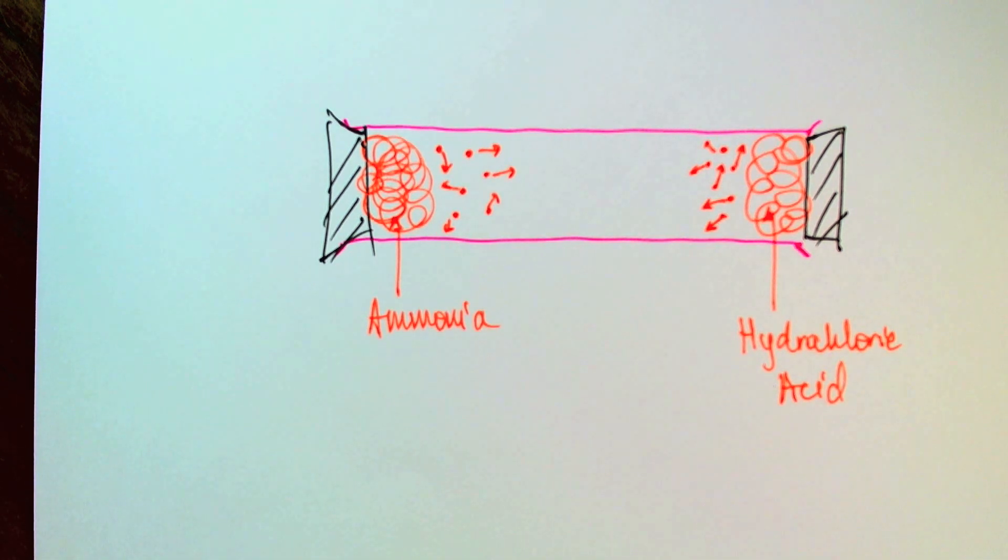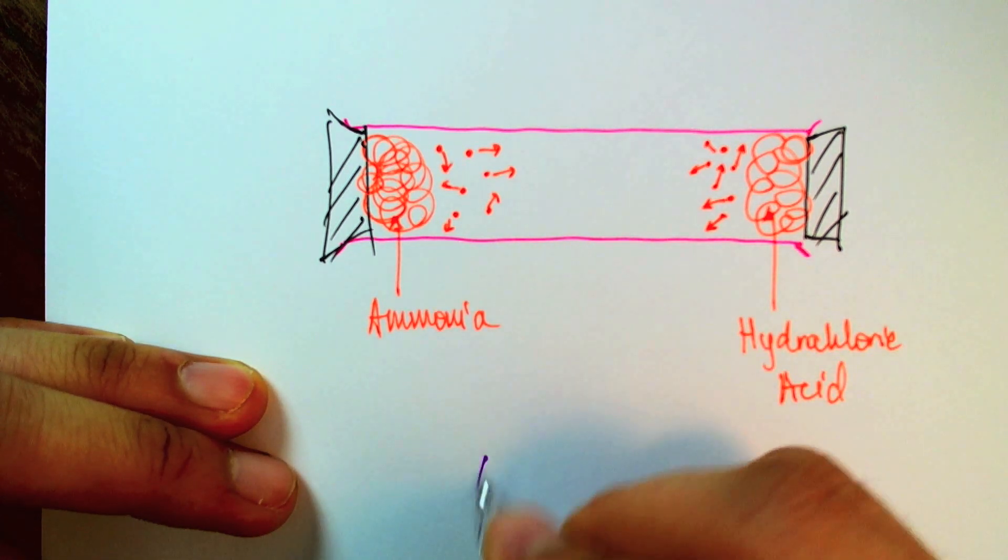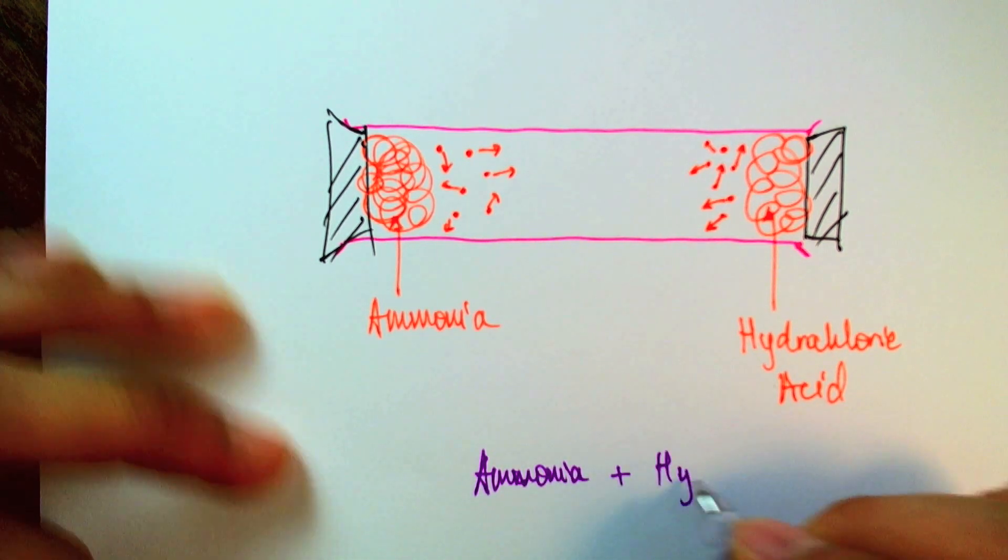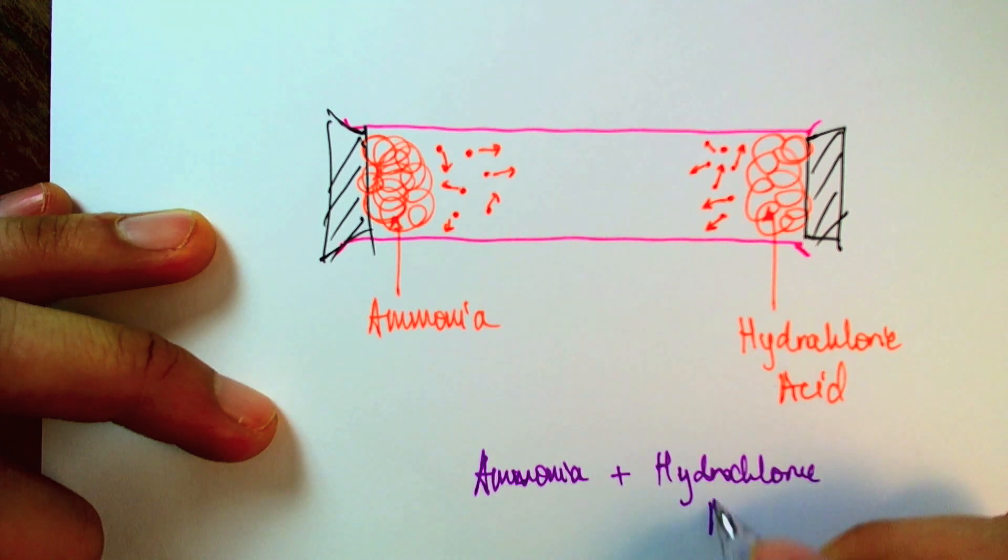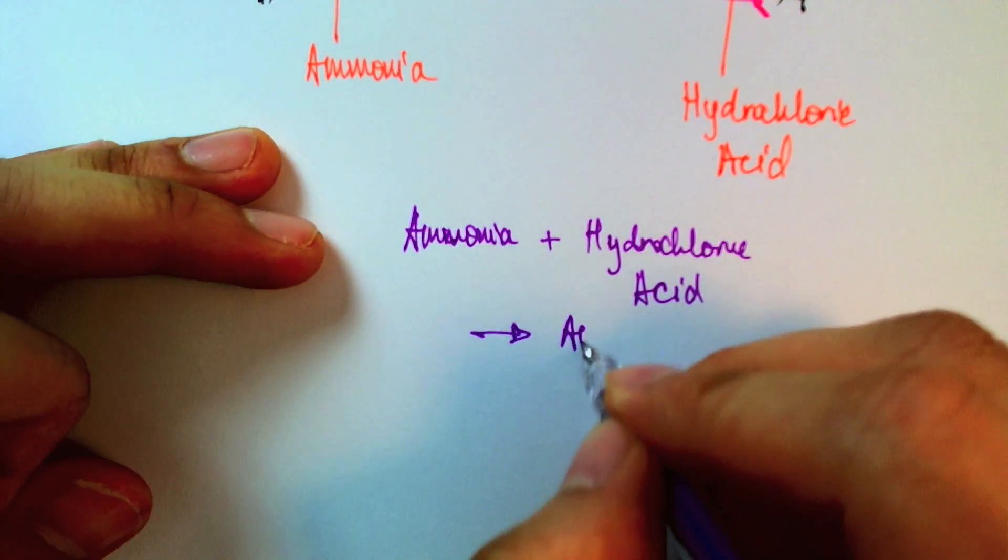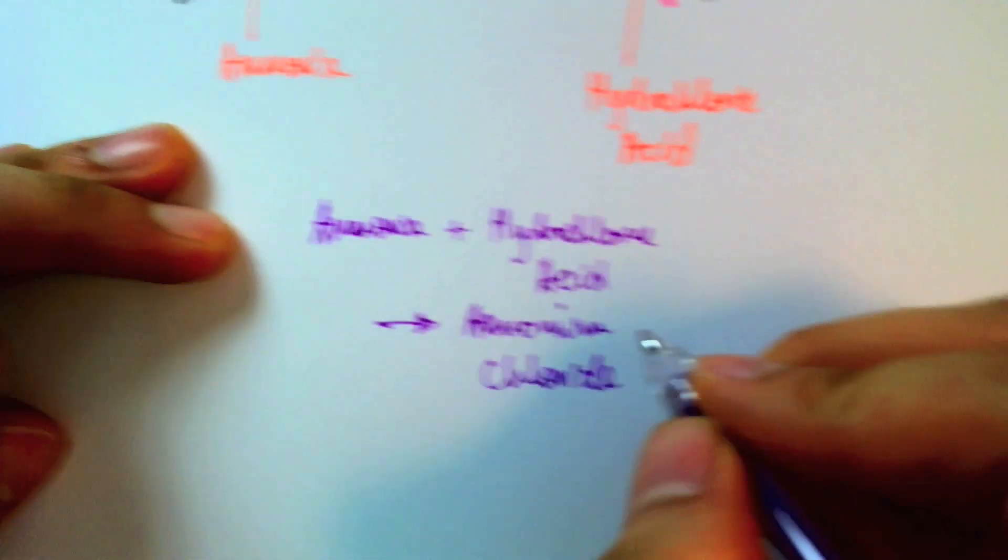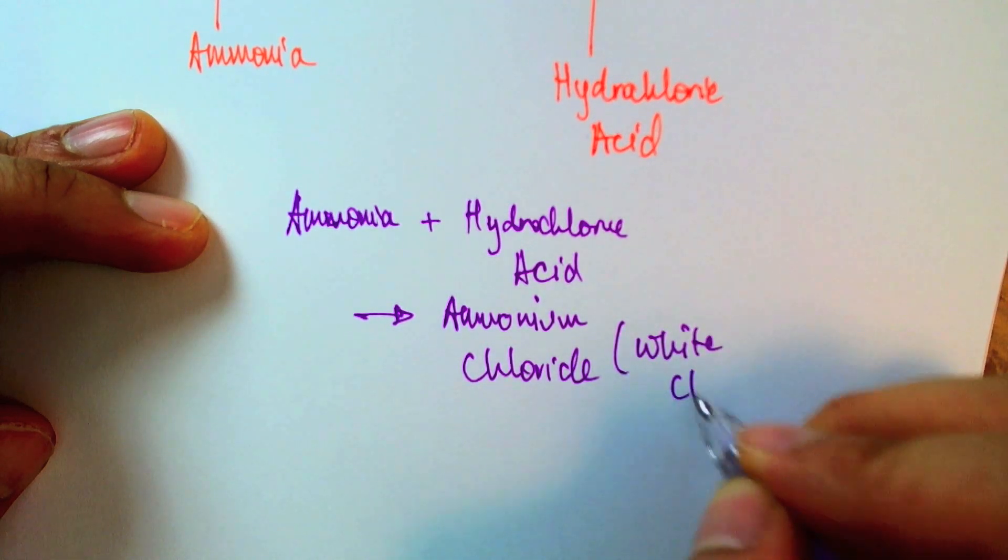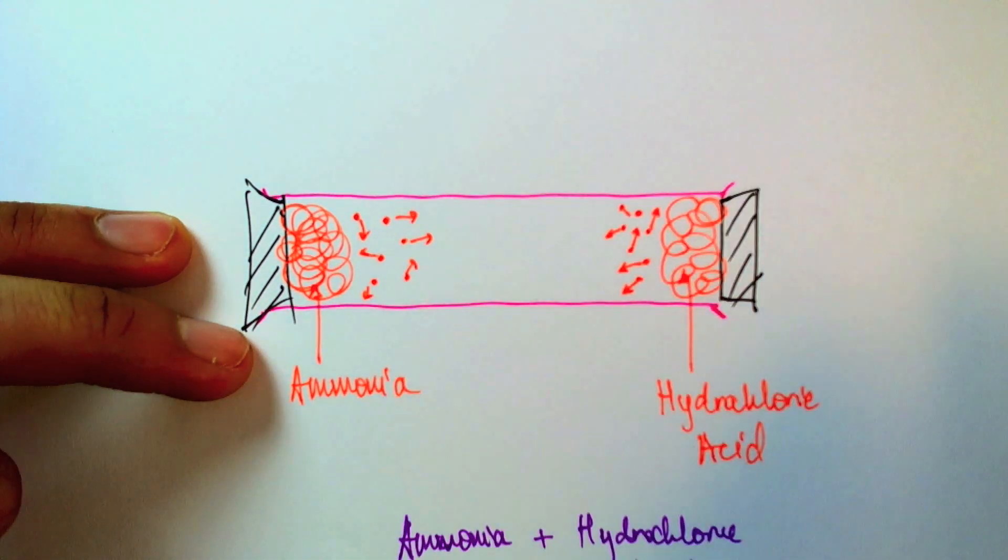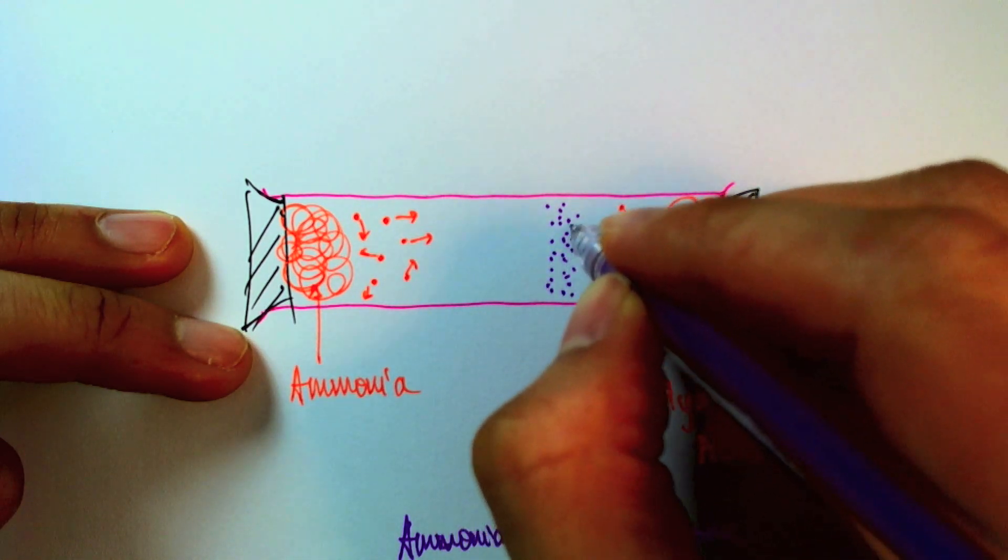When they do meet, they form something called ammonium chloride. The ammonia, when it meets the hydrochloric acid, will form ammonium chloride, which happens to be a white cloud. Ammonia and hydrochloric acid is initially colorless, but they'll start forming a white cloud here, which I'll draw in purple, somewhere here.